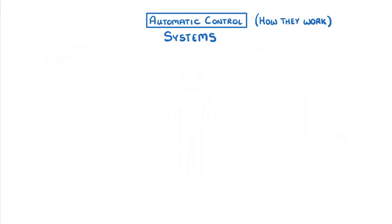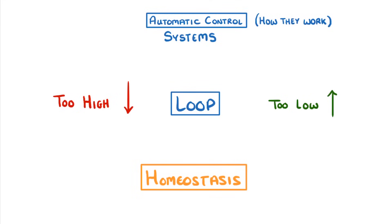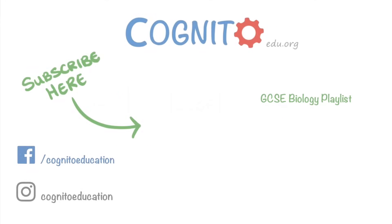So really, what we have overall is a loop. If the levels of something get too low, our automatic control systems bring them back up to normal through negative feedback. And if they then get too high, another control system will bring them back down. And that's homeostasis — basically the overall process of maintaining a stable internal environment for us. That's it for this video, I hope you enjoyed, and we'll see you next time.